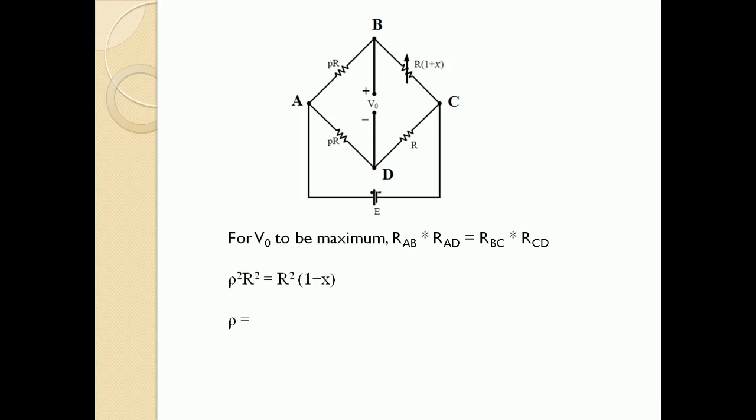After substituting the parameters, we get rho squared R squared equals R squared multiplied by one plus X. We can cancel R squared from both sides, giving rho squared equals one plus X. Therefore, rho equals the square root of one plus X.